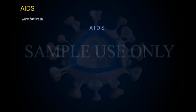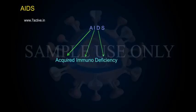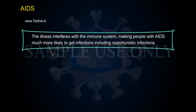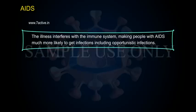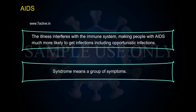AIDS — the word stands for Acquired Immunodeficiency Syndrome. The illness interferes with the immune system, making people with AIDS much more likely to get infections, including opportunistic infections. Syndrome means a group of symptoms.